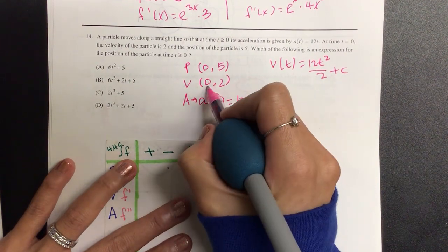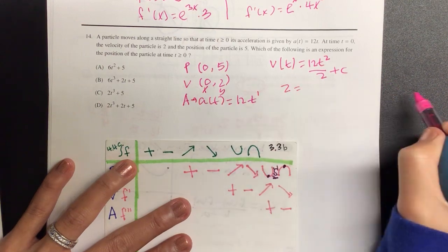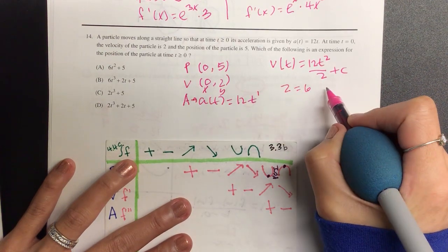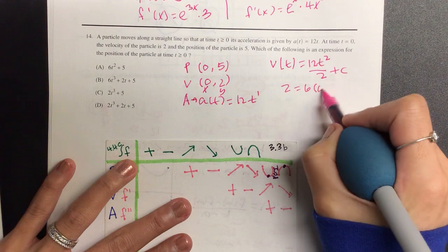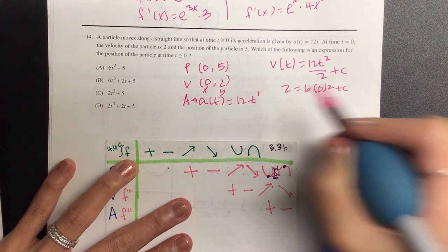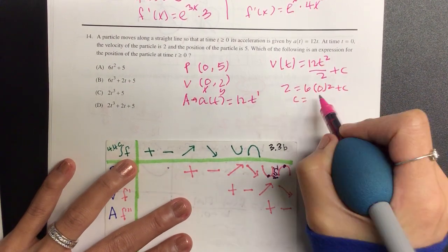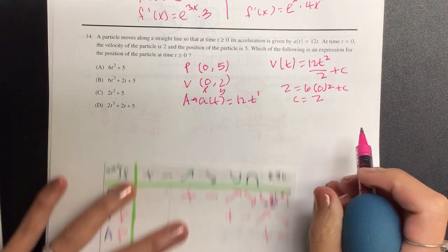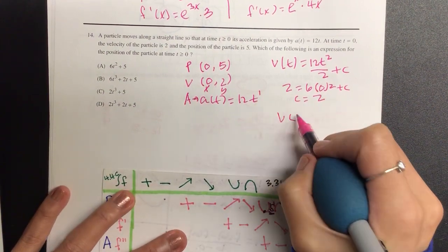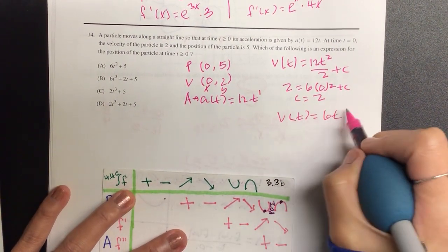And then we're going to plug in, this is my x, that's my y. So we have two is equal to six times zero squared plus c. So that means our c has to be how many? Two. So then I'm going to write out v of t is equal to six t squared plus two.